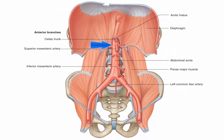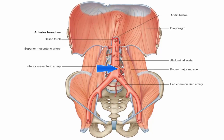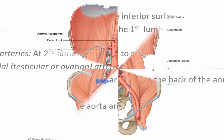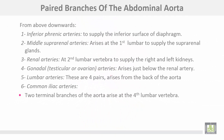In summary, the single midline branches of the abdominal aorta are: number one, the celiac artery; number two, the superior mesenteric artery; number three, the inferior mesenteric artery; and number four, the median sacral artery.